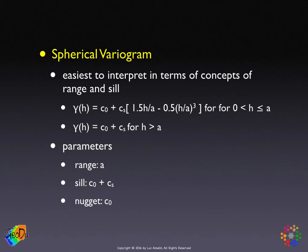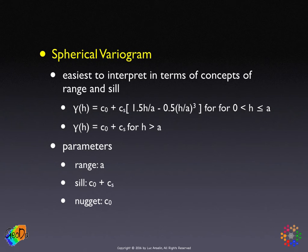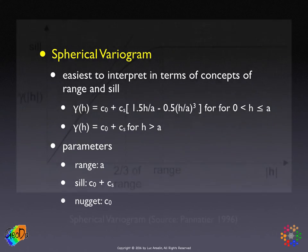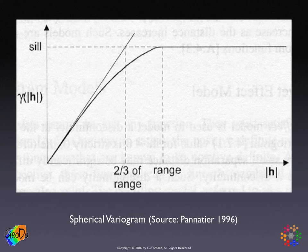The sill is the total variance of the process, but because of the nugget effect, it can be separated into the nugget c0 and the partial sill Cs, which changes with distance. The total variance — the sill — equals nugget plus partial sill. The range is A. The model changes with distance before the range is reached, then becomes constant beyond the range, with the constant equal to the sill.